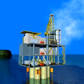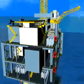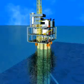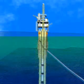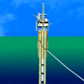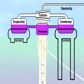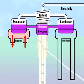OTEC uses this continuously renewing energy to generate electricity without oil, coal, natural gas, or any other fuel. OTEC only needs the temperature difference between the hot surface water and cold deep water of the ocean. Ocean Thermal Electric Conversion takes the hot surface water and uses it to boil another liquid, like propane, which has a very low boiling point — the temperature at which a liquid becomes a gas.